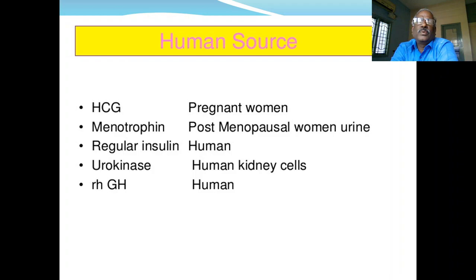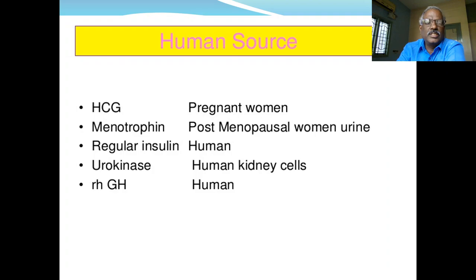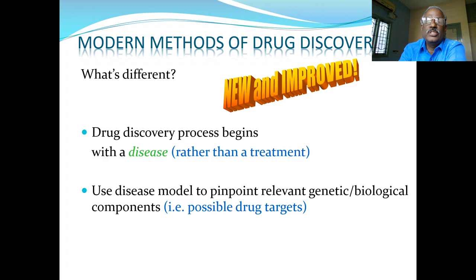The most important example of drugs from human sources is insulin. Previously insulins were obtained from beef and pork, which are allergic in nature. After development of recombinant DNA technology — using the plasmid of E. coli — it is now possible to produce insulin of human origin. Urokinase, obtained from human kidney cells, has antithrombolytic activity. Recombinant growth hormone, also obtained from humans, is used for the treatment of dwarfism. These are all drugs obtained from human origin.